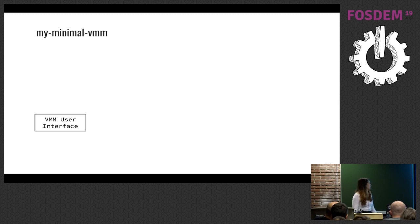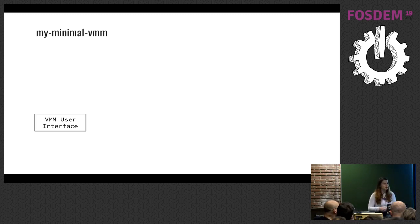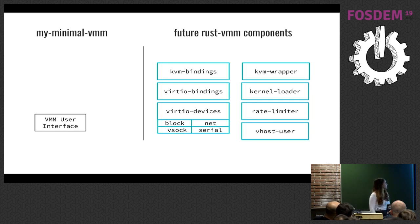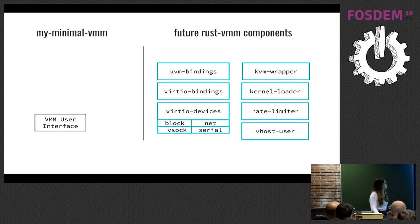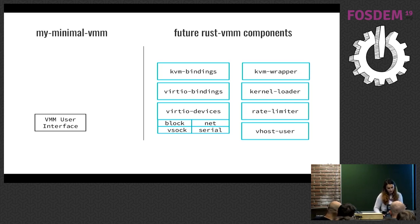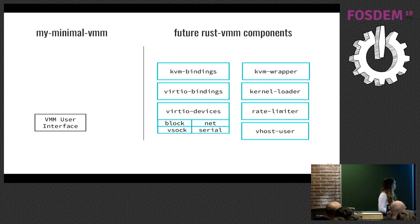The first thing we're going to do is write the VMM user interface — basically the place where an external client configures the VM it wants to run. Next, let's look at the future rust-vmm components and talk a bit about structure. Each box on the right side of the screen is a crate or package — in Rust, packages are called crates. Each crate can have zero, one, or many modules. For example, the virtio-devices crate has a block device, a net, a VSOCK, and a serial, each structured as a module. Rust also lets you import only the specific module you need — for example, just the block device — using features, which is basically conditional compilation.